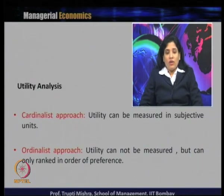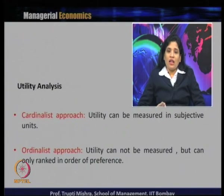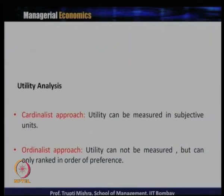The unit by which utility is measured under the cardinalist approach is called 'utils.' Under the ordinalist approach, utility cannot be quantified but can be ranked in order of preferences. For example, if you take the experience of having food at different restaurants, both approaches handle it differently.